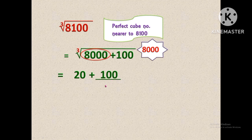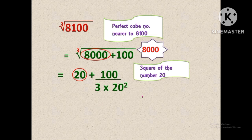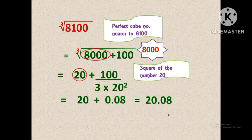We have to find the square of the number 20, so we write 20 squared. Doing the calculation, we get 20 plus 100 divided by 1,200. The value of 100 divided by 1,200 is 0.08. So we rewrite as 20 plus 0.08, and finally we get 20.08. The approximation cubic root value for 8,100 is 20.08.